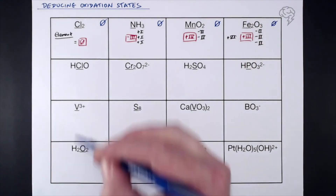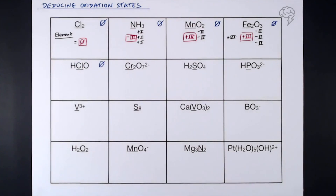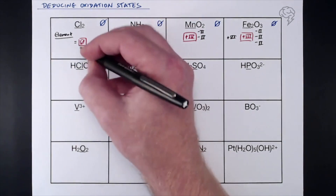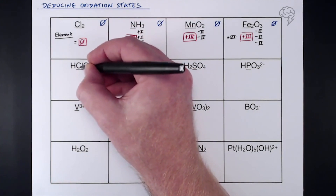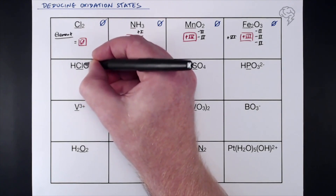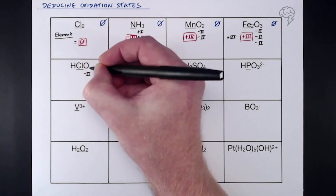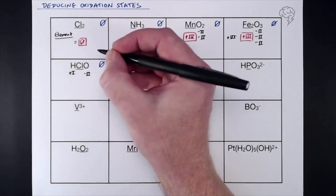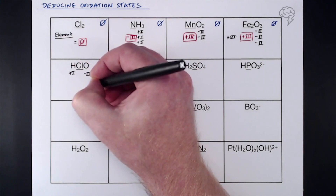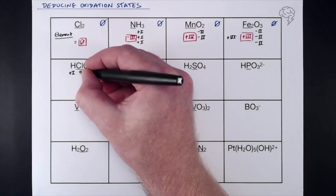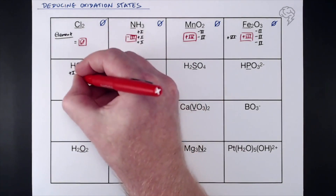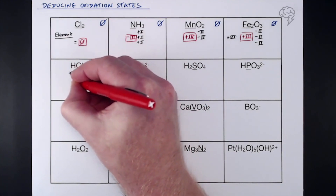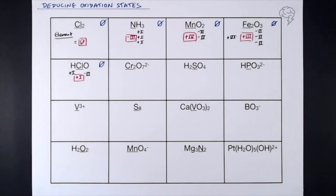HClO — overall oxidation state zero. This is a weird example where we're finding chlorine. Chlorine is usually −1, but not when it's bonded to a more electronegative element — in this case, oxygen. Oxygen is −2 and hydrogen is +1, so −2 + 1 = −1. The difference between −1 and zero means chlorine must be +1. That's unusual — we'd normally expect −1 — but remember what the rules said in the previous tutorial.